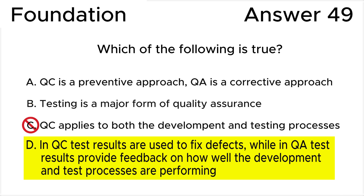Answer C is wrong. Quality control primarily applies to the testing process, not the development process. QC involves activities like testing, inspection, and reviews to identify defects in the product after it has been developed. While some QC activities can be applied during development, such as code reviews, the primary focus of QC is on the testing phase. Quality assurance applies to both development and testing processes, and involves process improvement activities throughout the software development life cycle.